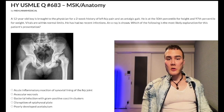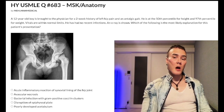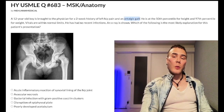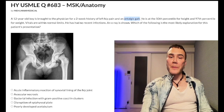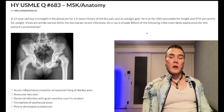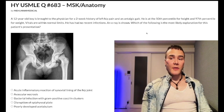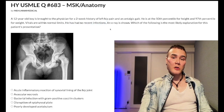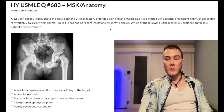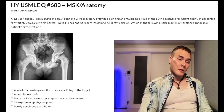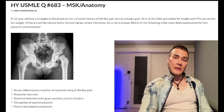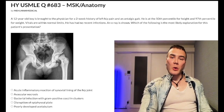The question: a 12-year-old boy has a two-week history of left hip pain and an antalgic gait — a vocabulary word meaning walking with a limp, not specific to any one condition. He's at the 50th percentile for height and 97th percentile for weight. Vitals are within normal limits. He's had no recent infections — an important detail. An x-ray is shown, and the question asks for the most likely explanation.